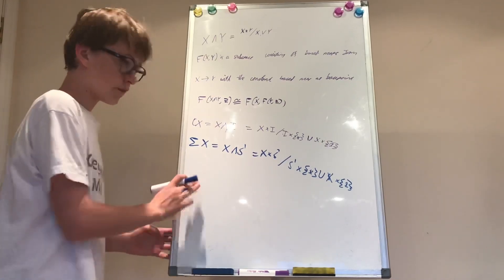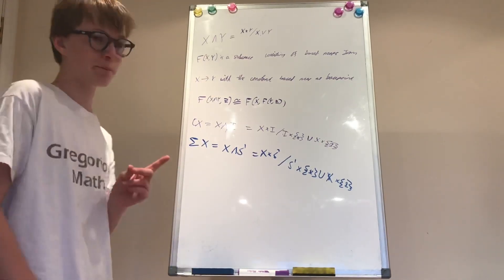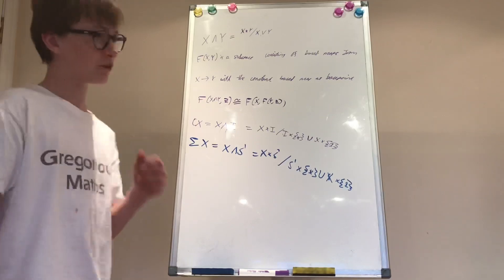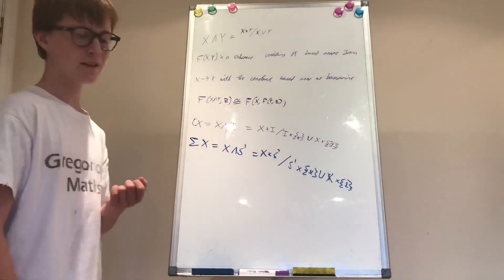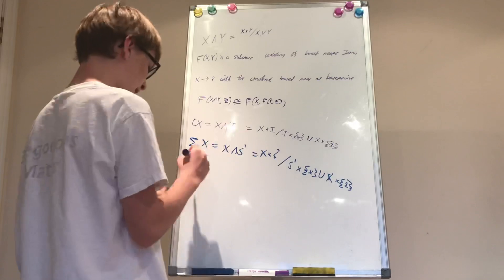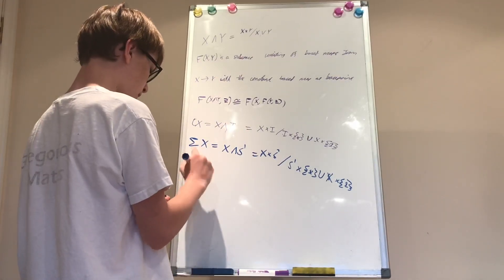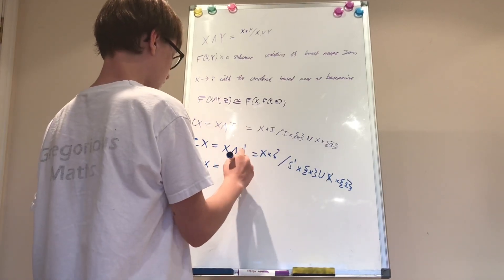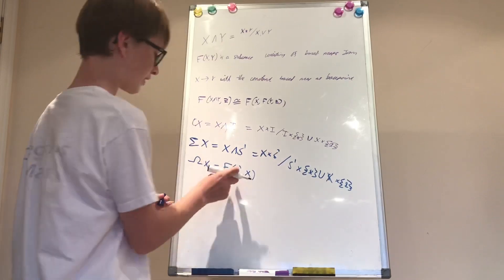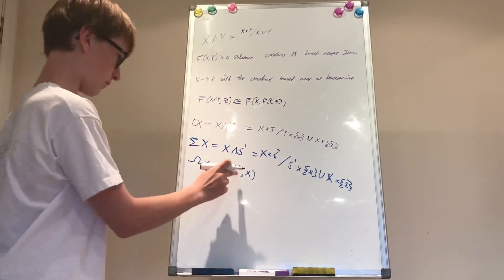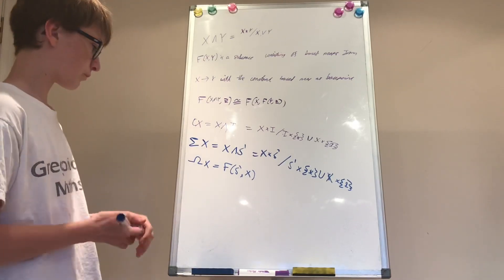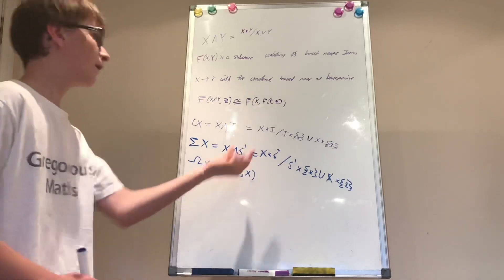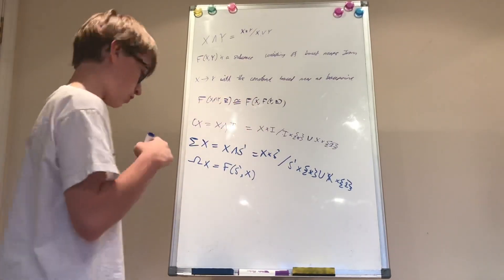We can define the loop space — this will be very important in the next video where we define higher homotopy groups, which is a very exciting topic. The loop space is defined as Omega of X, and this is equal to F of (S¹, X), so it's the set of based maps from the one-sphere to X.